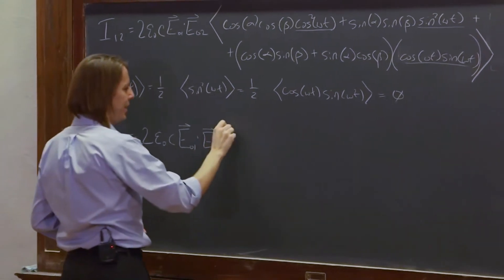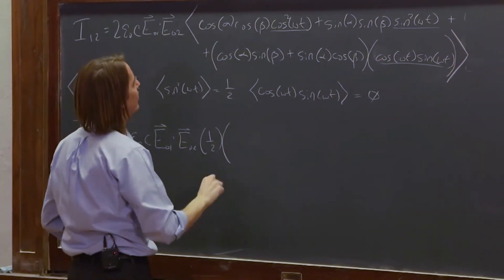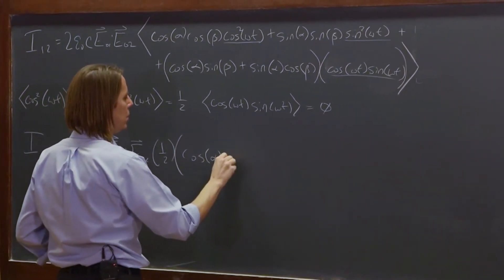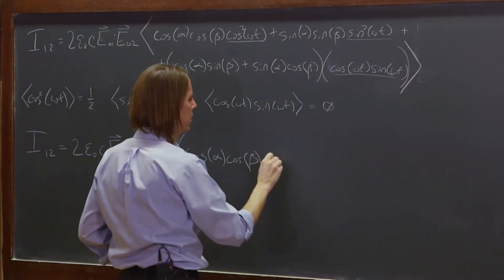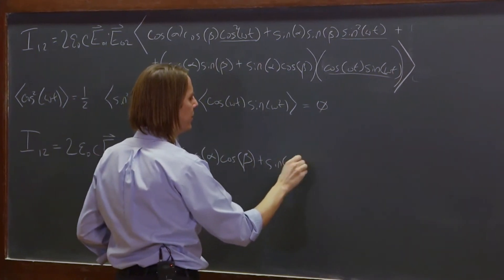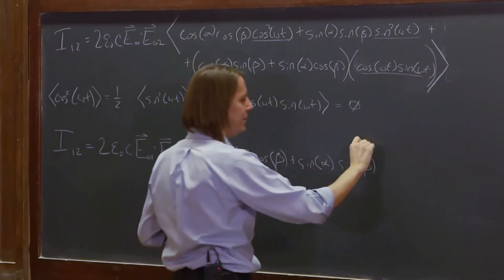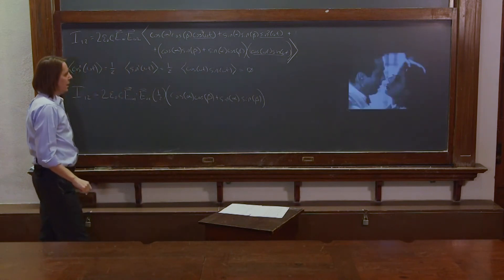This times a half plus this times a half. So, times a half, and then times the sum of those two. Cosine alpha, cosine beta. And then plus here, sine alpha, sine beta. And that's no longer a time average. That's just a term.